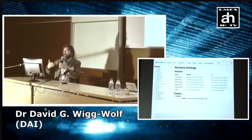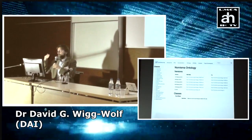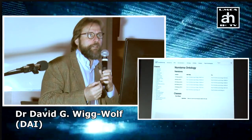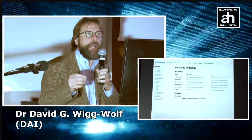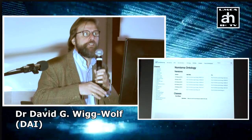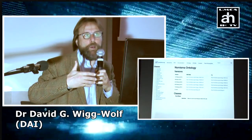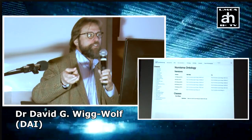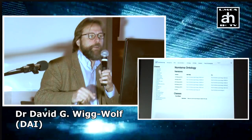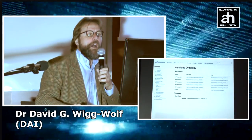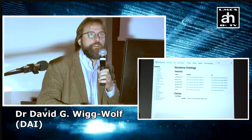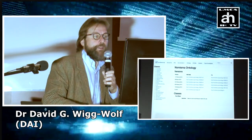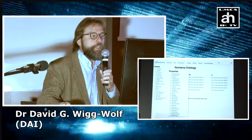Although we have a definition of what a denarius is and a definition of who Augustus is, these are only words. And if we want to go into the machine-readable world, we need a grammar — we need to be able to link these words together. 'You, me, dinner' is not a very good way of inviting the love of your life out for a romantic meal, because it might mean I want to eat you for dinner and not I want to take you out to dinner. So you need a grammar to explain how these words fit together. Within Nomisma, we've also defined an ontology which explains how these various concepts fit together. We have classes and we have properties.